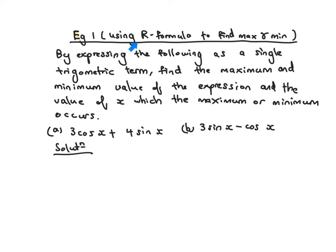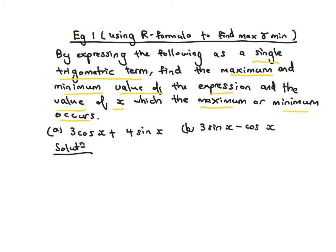Let's run through an example using the R formula to find the max or minimum value of a given expression. The question asks us to express the following as a single trigonometric term. We notice the format is a number cos x plus another number sin x — this is the format for the R formula: something sin x plus something cos x, or something sin x minus something cos x. Both can be expressed as a single trigonometric term using the R formula.